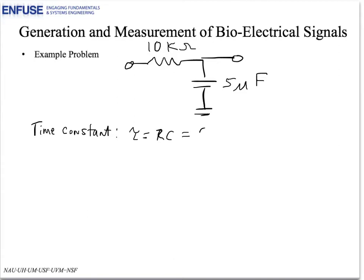which is going to be 10 times 1000, that's our 10 kilohms, times 5 times 1E to the minus 6, that's 5 microfarads, and so we get 50 times 1E to the minus 3, or 0.05 seconds.